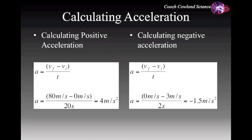In the second example, Vf minus Vi over T: the final velocity is 0 meters per second, the initial velocity is 3 meters per second, so this is coming to a halt, and it takes 2 seconds to get there. So 0 minus 3 is negative 3, divided by 2 is negative 1.5 meters per second squared. As you can see, when slowing down the acceleration is negative, and when speeding up the acceleration is positive.